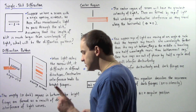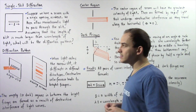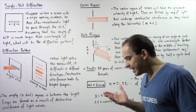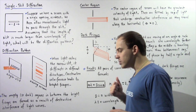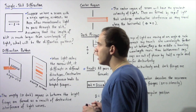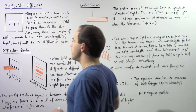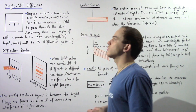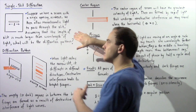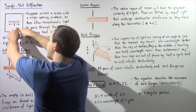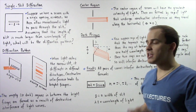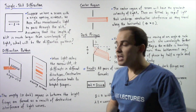Let's assume that the light is coming from very far away, so that the rays of light are essentially parallel with respect to one another as they go through the narrow slit. We can also assume that the length of the slit L is much greater than the wavelength of the actual light.